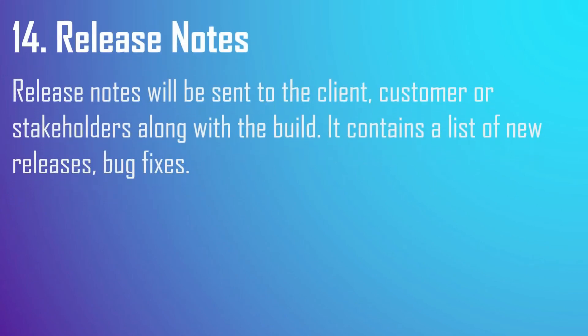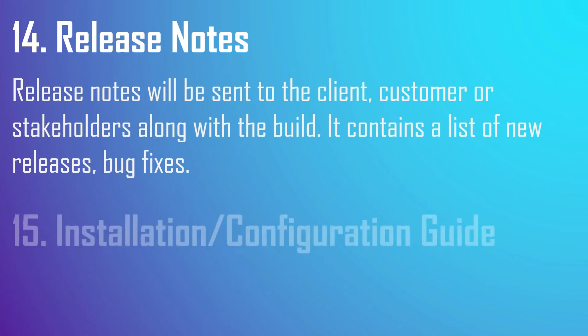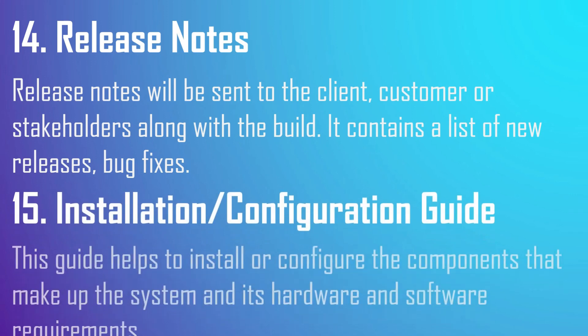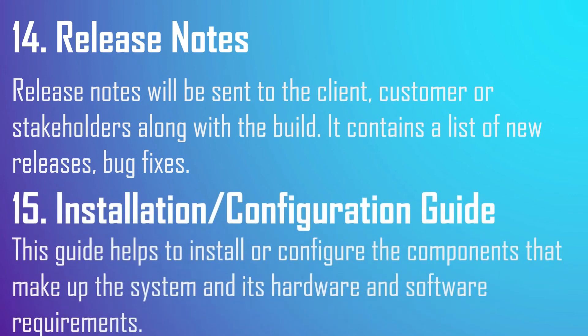Test completion report gives a detailed analysis of bugs found, bugs removed, and discrepancies found in the software. Next, release notes — release notes will be sent to the client, customers, or stakeholders with the report, and contain a list of new versions and bug fixes. The installation or configuration guide helps you install or configure the components that make up the system, along with its hardware and software requirements.